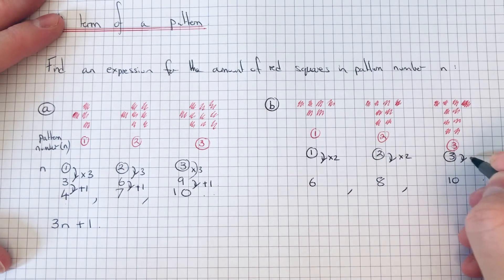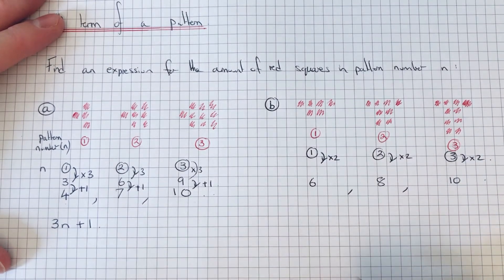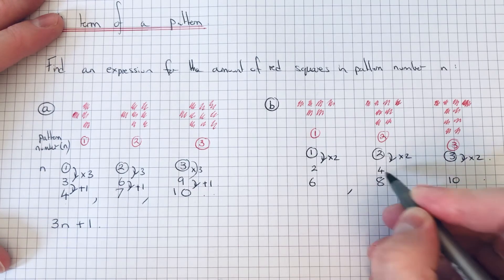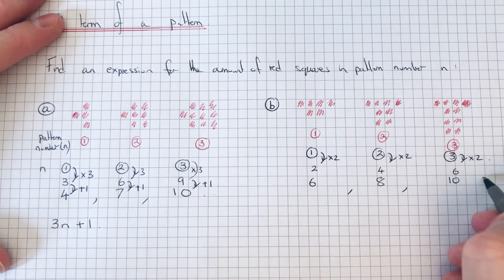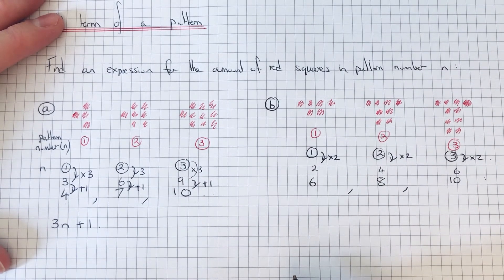So 1 times 2 is 2, 2 times 2 is 4, 3 times 2 is 6. Let's see what we do to these multiples of 2 to give us the number in the sequence.